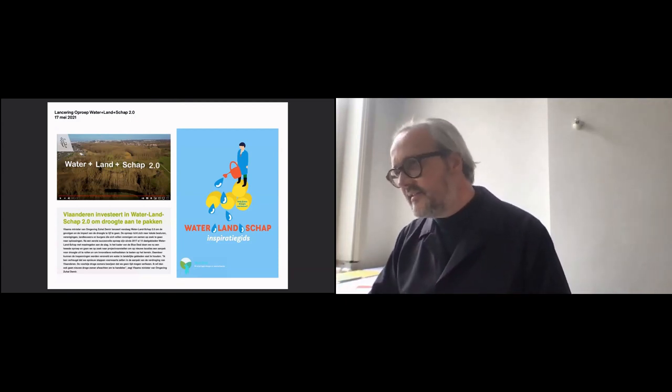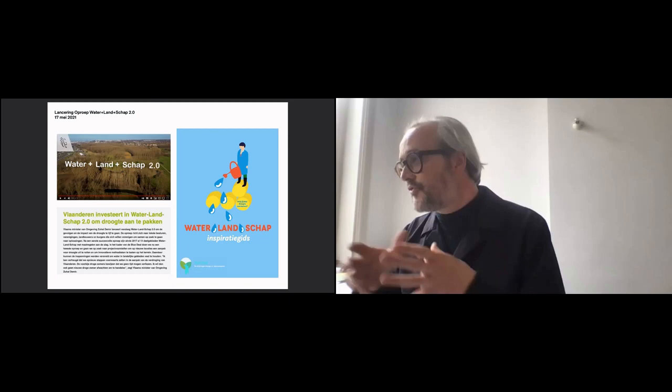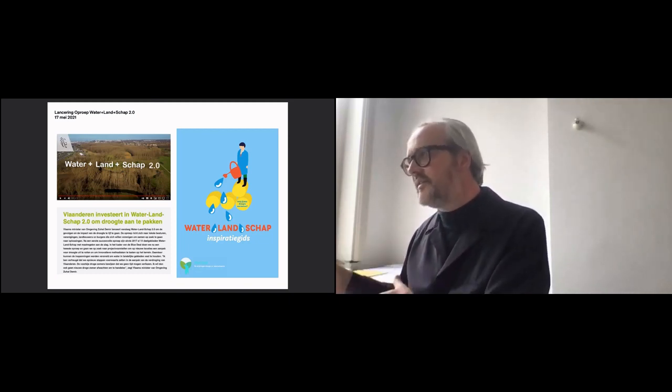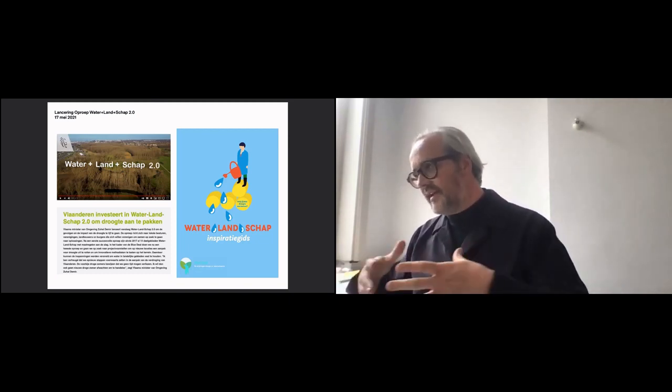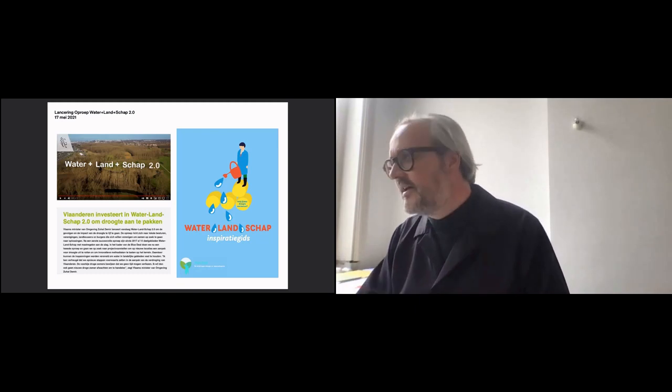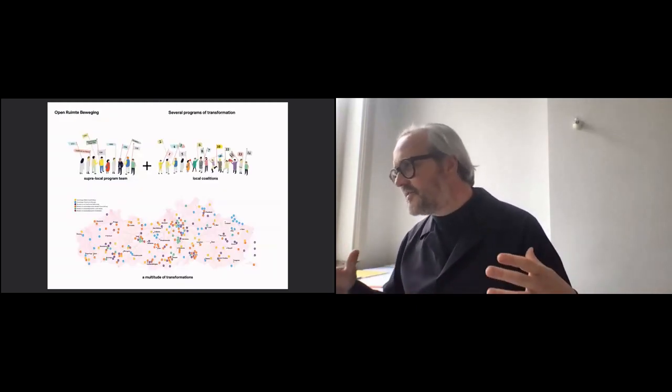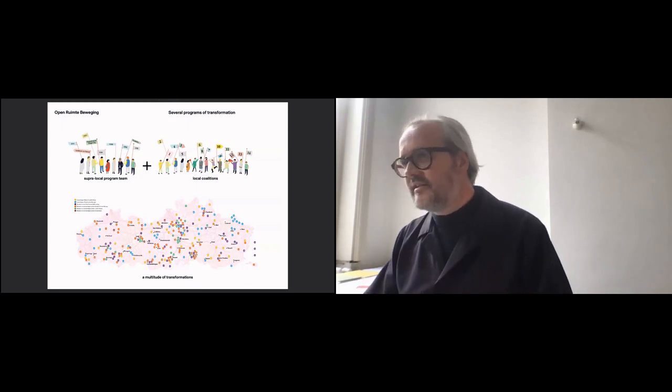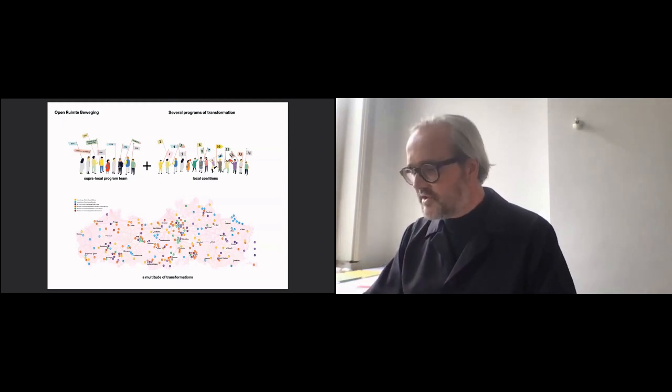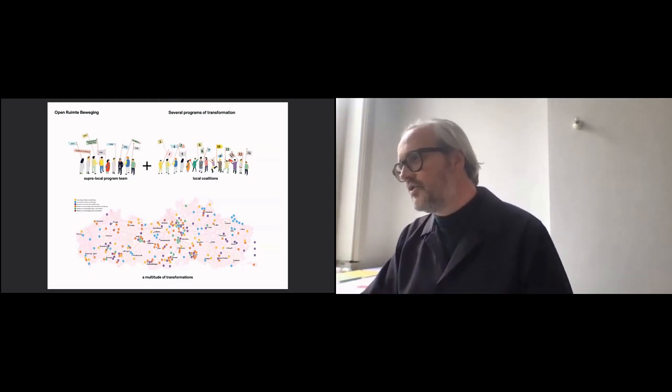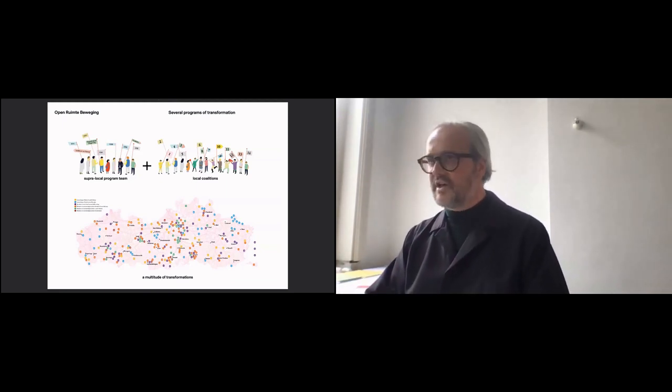In the meantime, experimental projects on droughts and hardening were also launched. You could say that about 100 types of projects are being experimented with, always guided by a super-local program team responsible for maintaining the mission and goal, supporting local coalitions in all these locations.